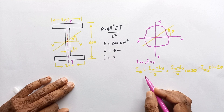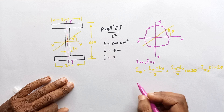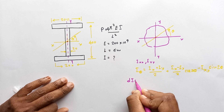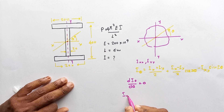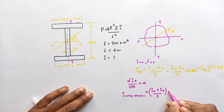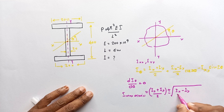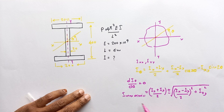To find the minimum or maximum I value, we differentiate the I_θ equation and set it equal to zero. Taking dI_θ/dθ = 0, we get I_max or I_min = (I_x + I_y)/2 ± √[((I_x − I_y)/2)² + I_xy²]. Using this equation we are able to calculate the maximum and minimum I values.